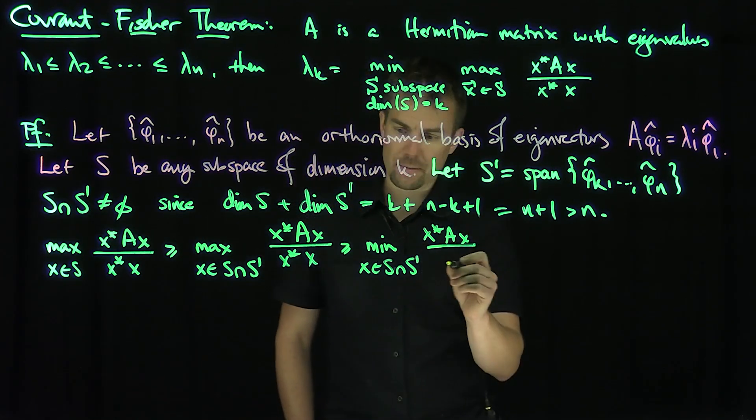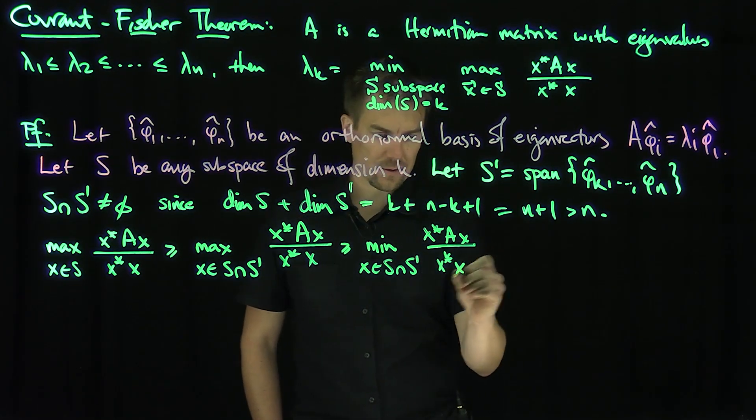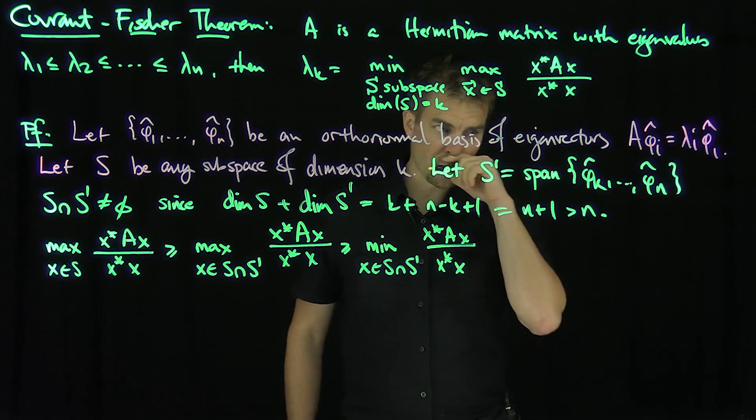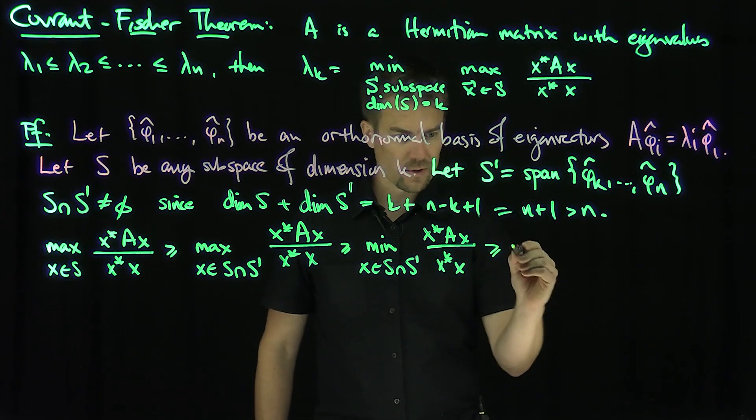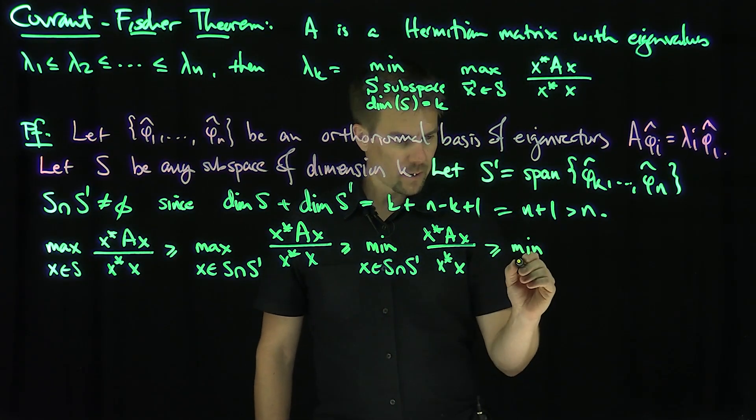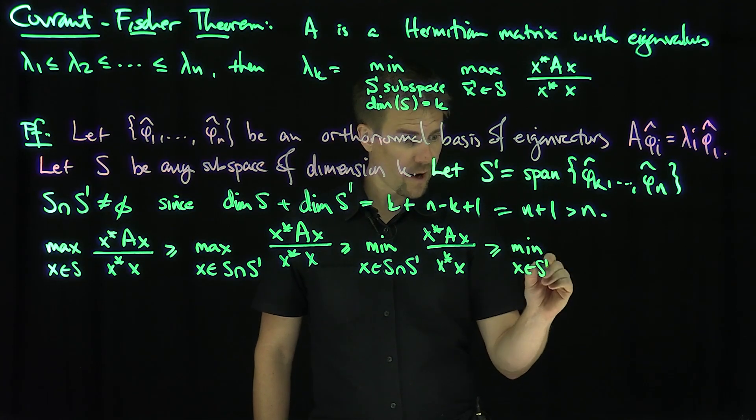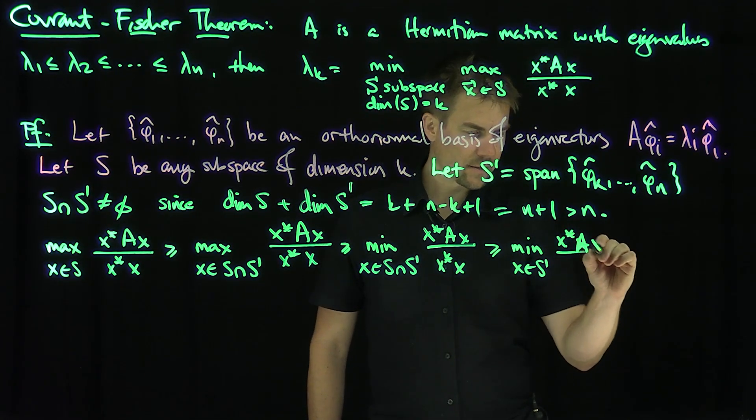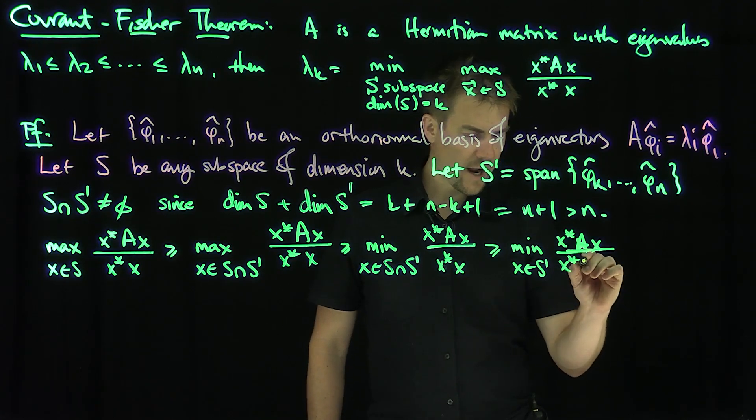We're choosing properties of maxes and mins here. And now I can make the min smaller by replacing it with just S'. So this is ≥ the minimum over x in S' of x*Ax over x*x.